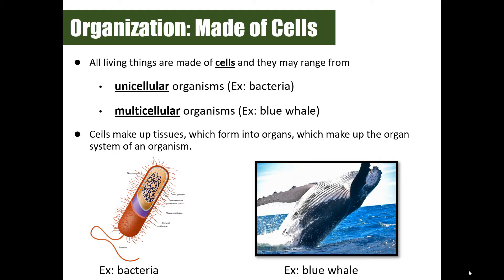All living things are made up of cells. This ranges from simple unicellular organisms to more complicated multicellular organisms made up of many cells. These cells make up tissues, tissues come together to form organs, and organs work together to form organ systems, which ultimately work on behalf of the organism.